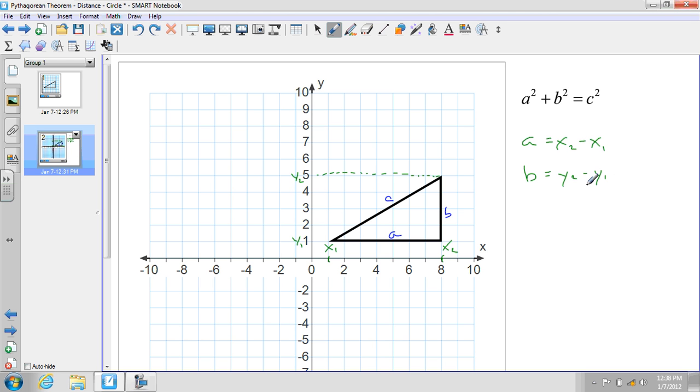We will agree that b is equal to y sub 2 minus y sub 1. In this case, 5 minus 1, which is 4. And certainly the length of b is 4.